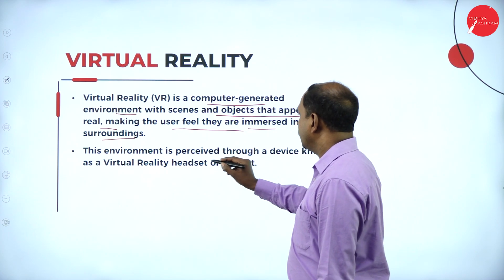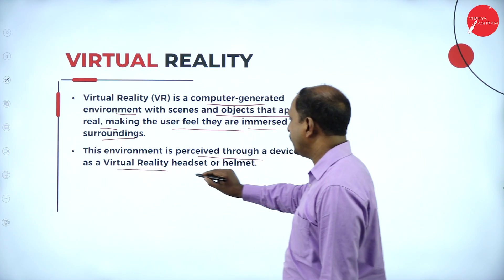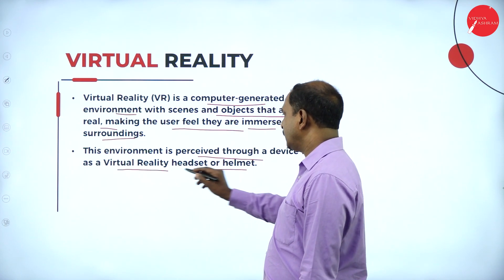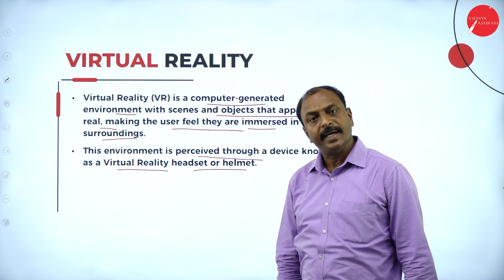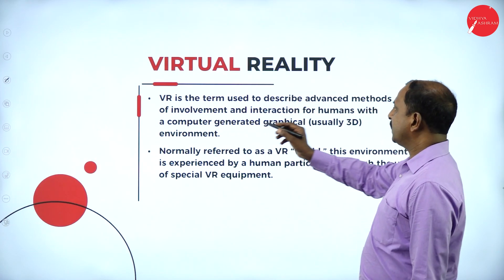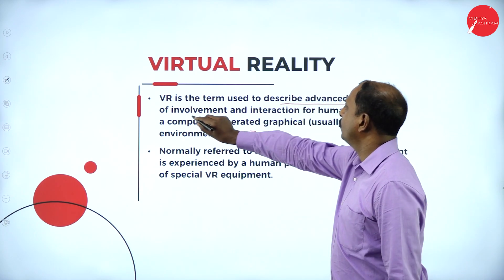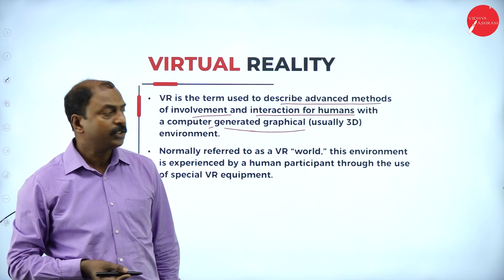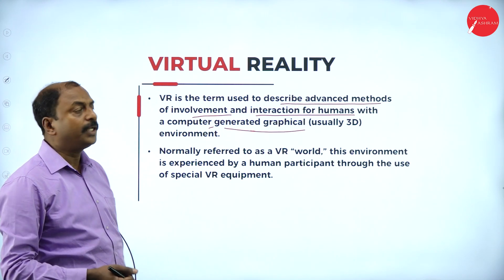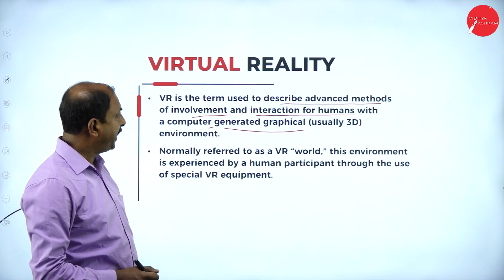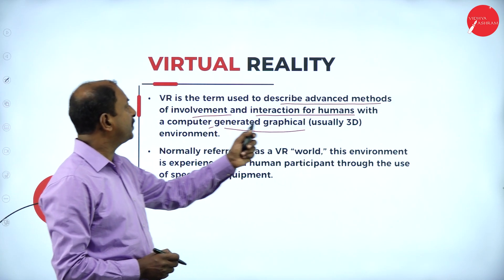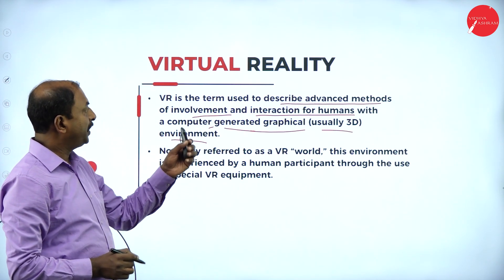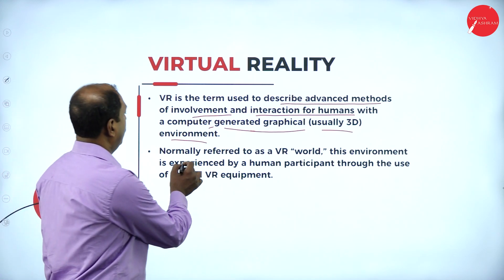This environment is perceived through a device known as a virtual reality headset and helmet. If you want to experience this, you need to make use of these two devices — headset and helmet. Virtual reality is the term used to describe advanced methods of involvement and interaction of humans with computer generated graphics, usually in a 3D environment.